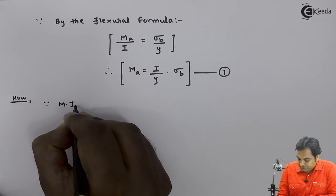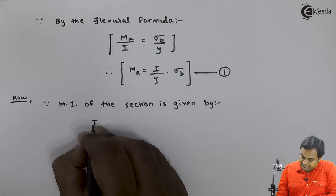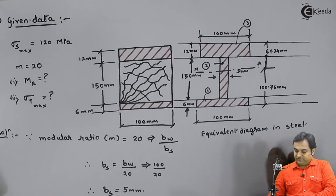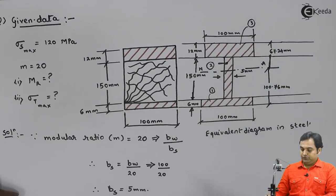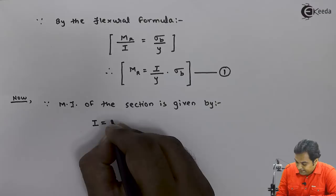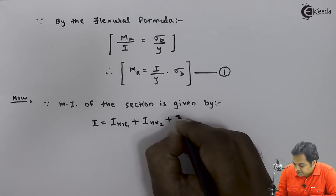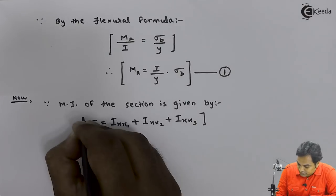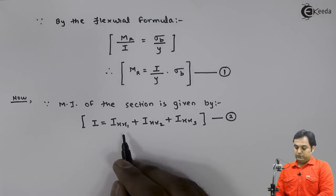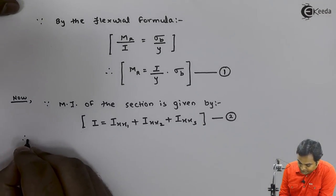The moment of inertia of the section is: I = I_xx1 + I_xx2 + I_xx3, where each term is the moment of inertia of each rectangle about the neutral axis. This is equation 2. I will now calculate I_xx1, I_xx2, and I_xx3 individually using the parallel axis theorem.